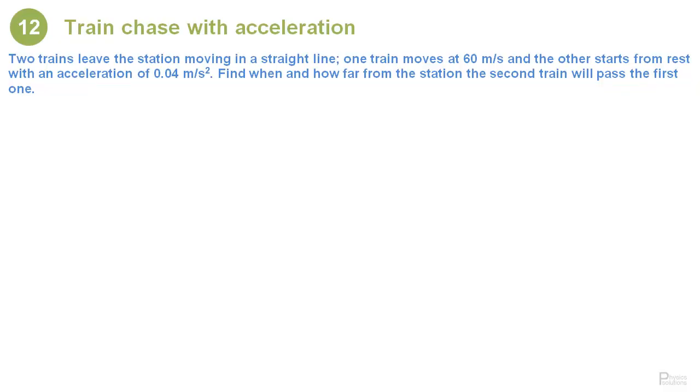Two trains leave the station moving in a straight line. One train moves at 60 meters per second and the other starts from rest with an acceleration of 0.04 meters per second squared. Find when and how far from the station the second train will pass the first one.